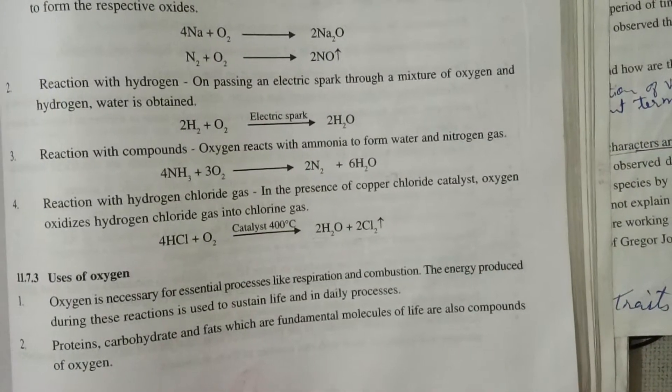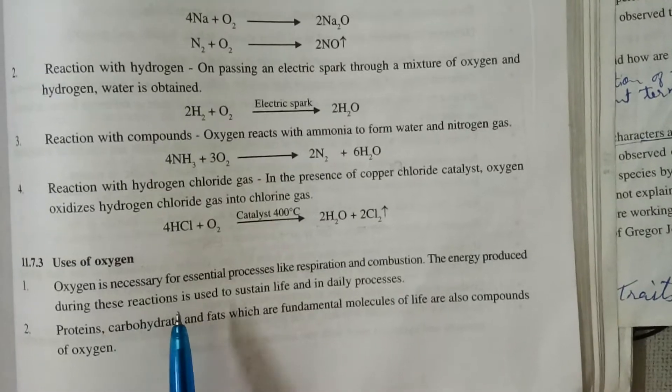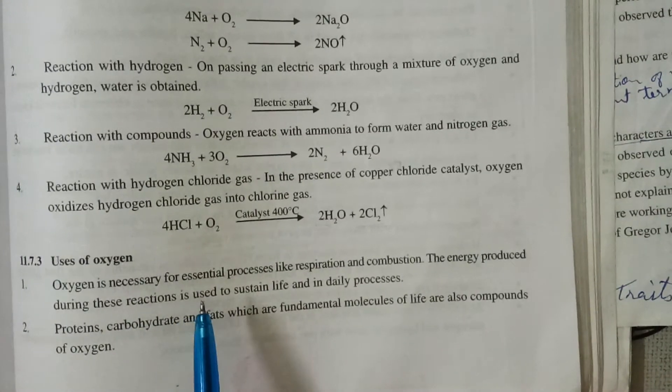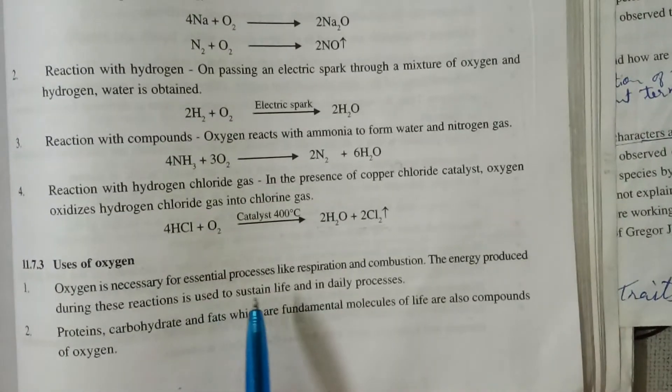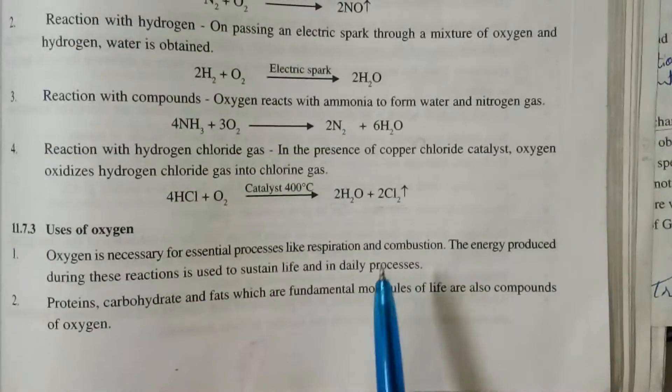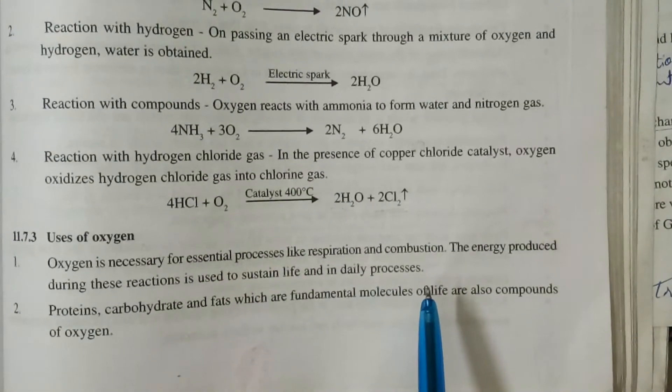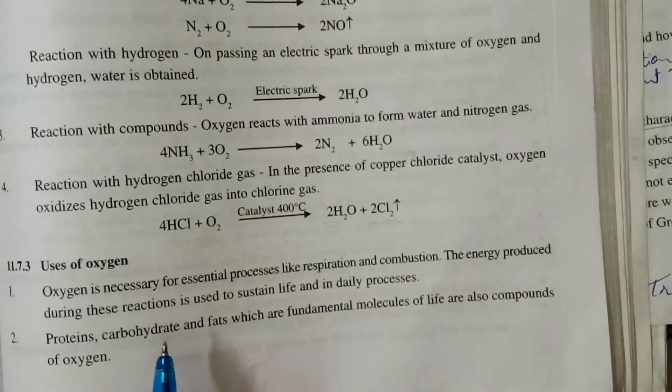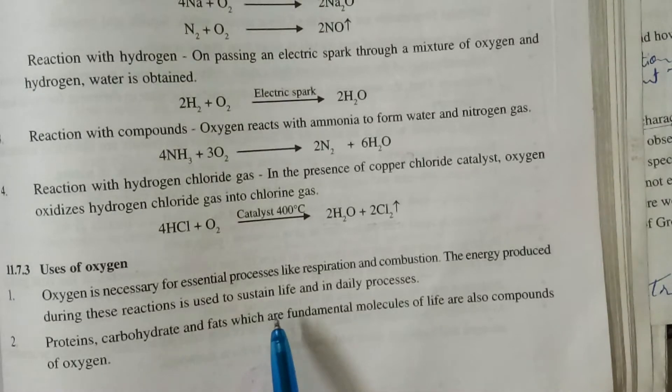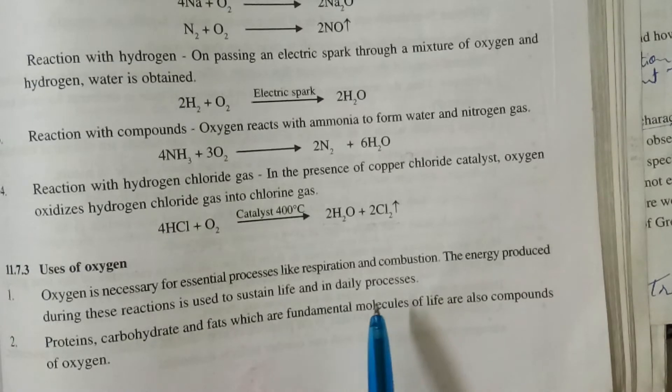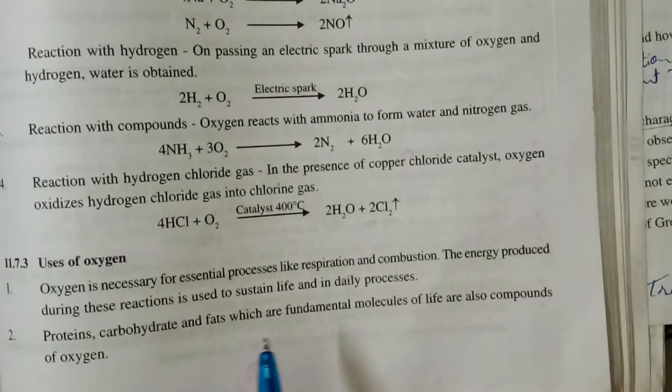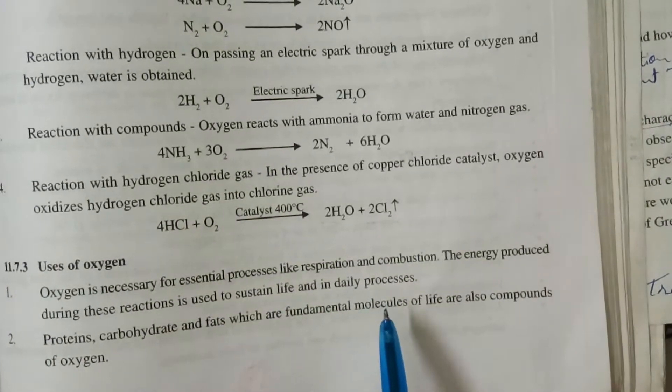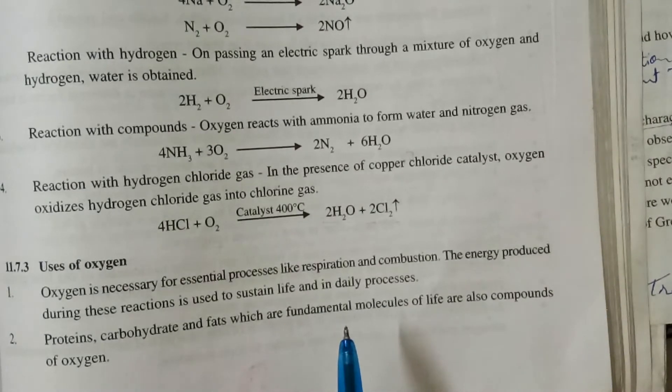We will see the uses of oxygen. Oxygen is necessary for essential processes like respiration and combustion. The energy produced during these reactions is used to sustain life and in daily processes. So oxygen gas is very essential for respiration and combustion. And during respiration energy is produced. And it is very essential to sustain life and our daily processes.